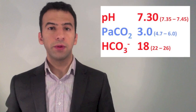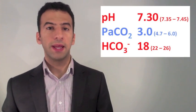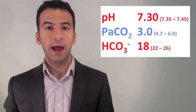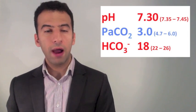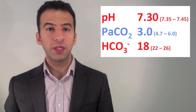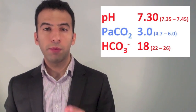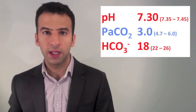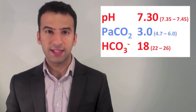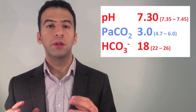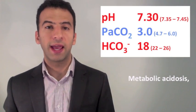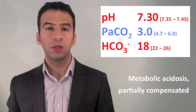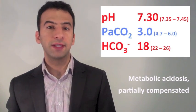In the third example, the pH is low — acidemia. Step 2: the CO2 is low as well, meaning less acid, more alkaline. They're both moving in opposite directions, so this is probably a metabolic acidosis. In Step 3, have a look at the bicarbonate — yes, it is low, which means that's acidifying, confirming our suspicion that this is indeed a metabolic acidosis. And since the CO2 is moving in the alkaline direction, this is partial compensation — a partially compensated metabolic acidosis.